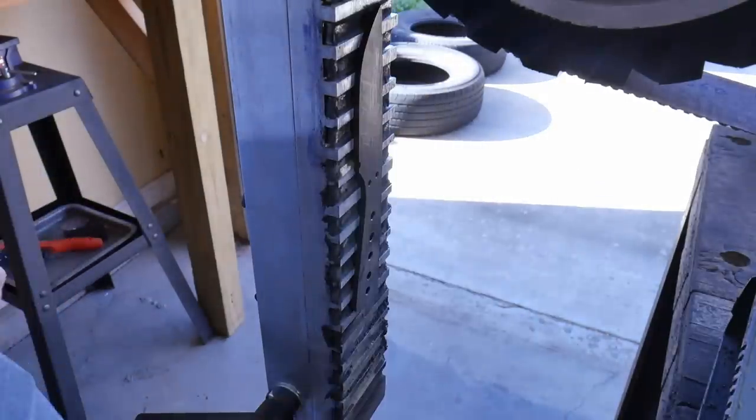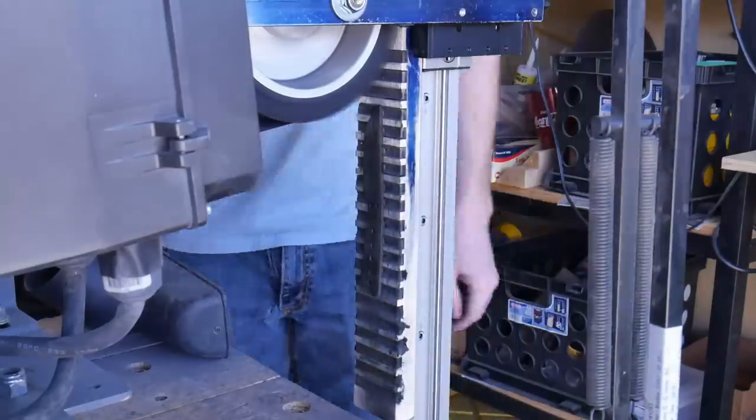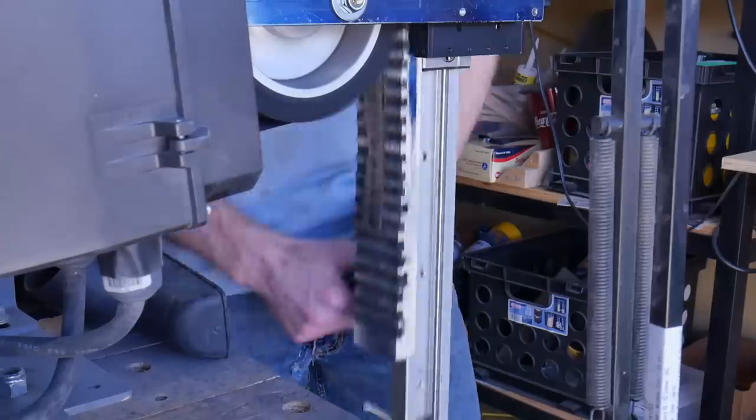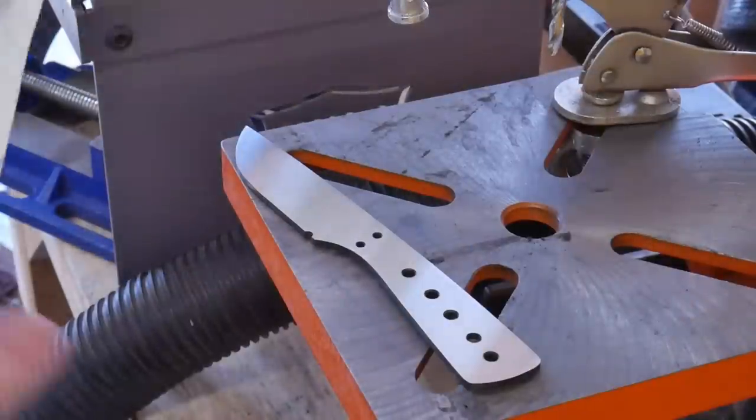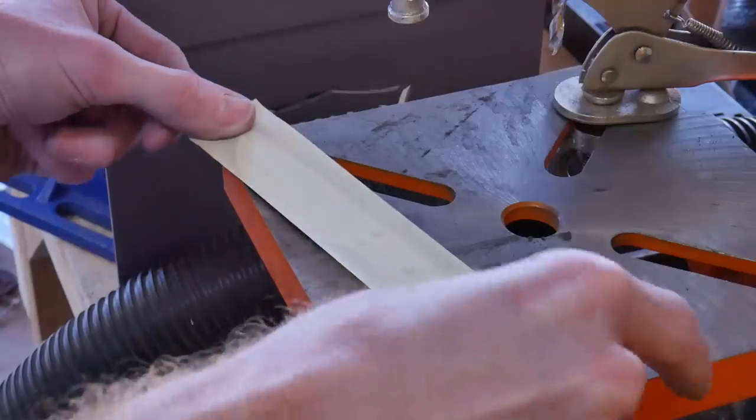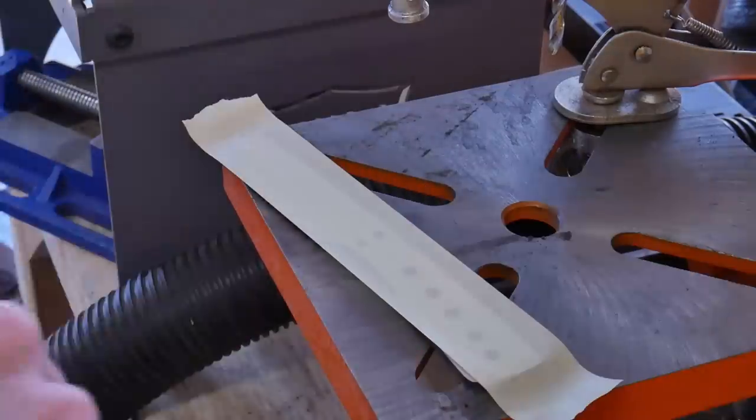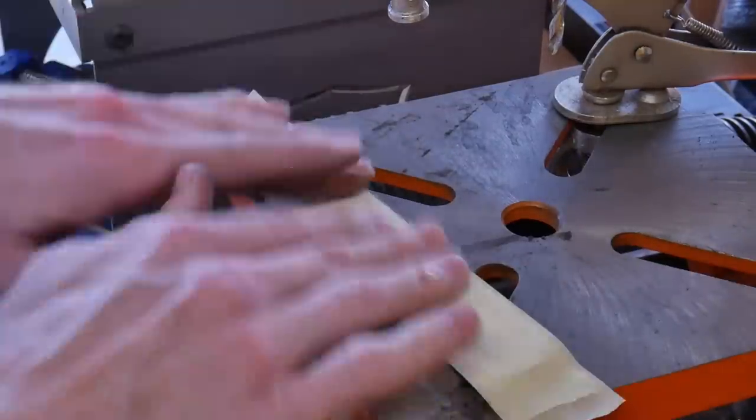After we get the blade heat treated, we move on over to the surface grinding attachment and start trying to get a nice smooth finish on this knife. After I get one side done, I put some tape on it so as not to scratch this finish and then work on the other side.